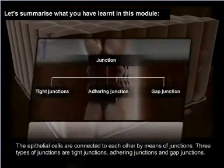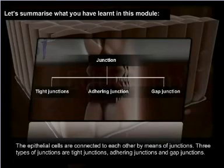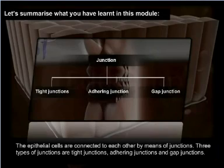The epithelial cells are connected to each other by means of junctions. Three types of junctions are tight junctions, adhering junctions, and gap junctions.